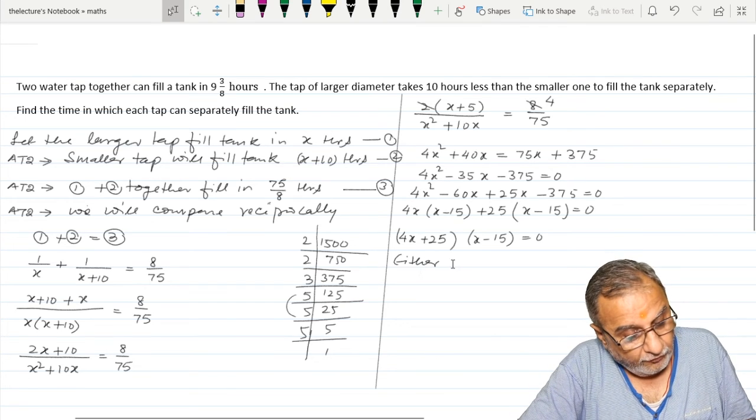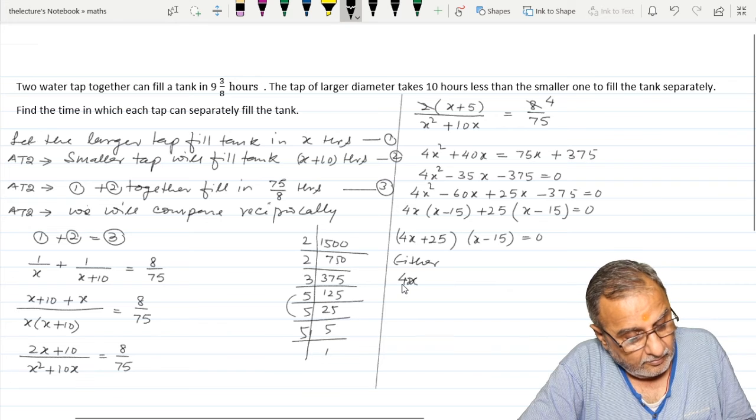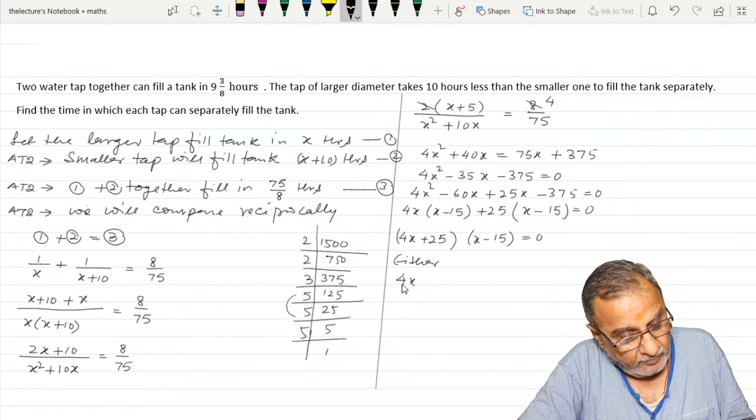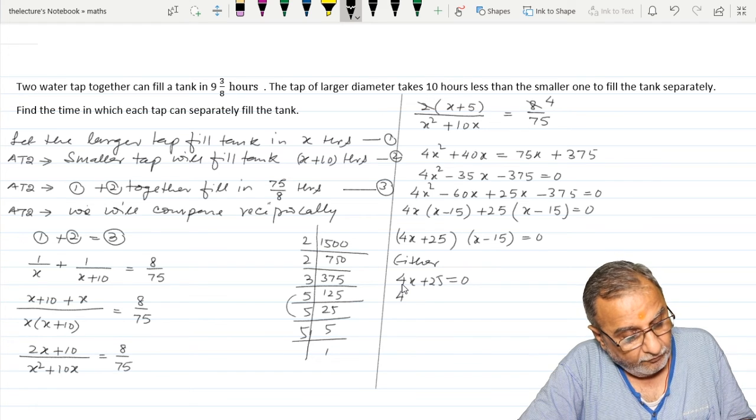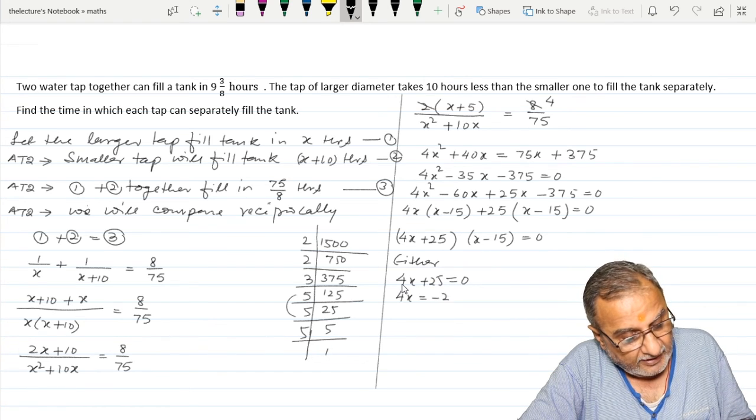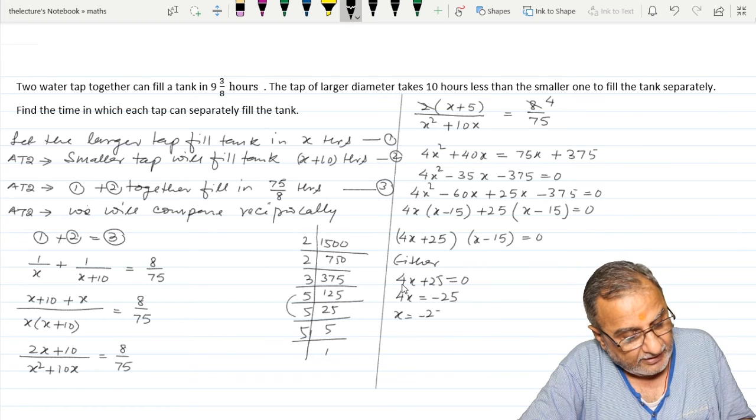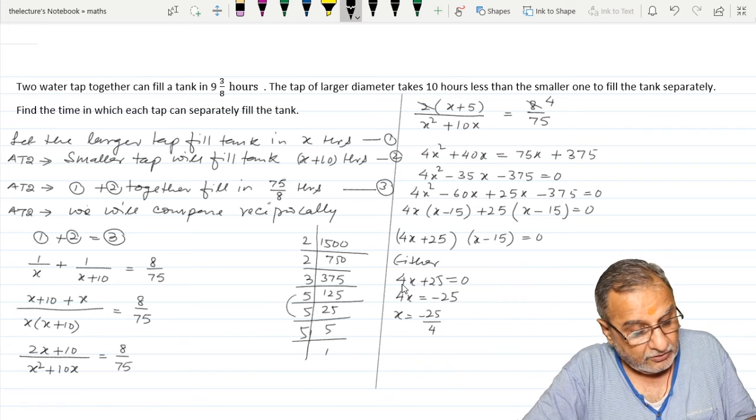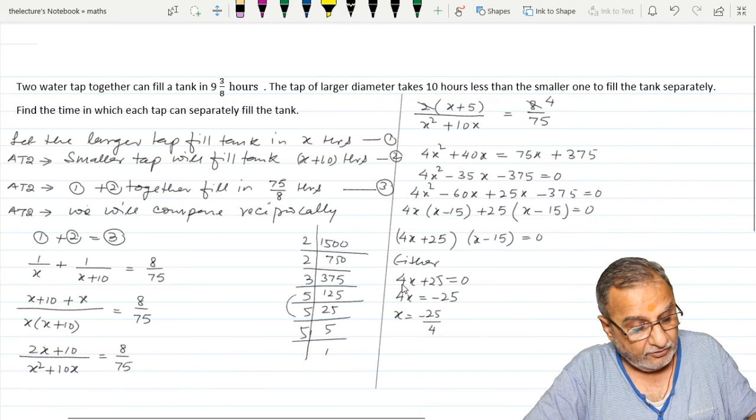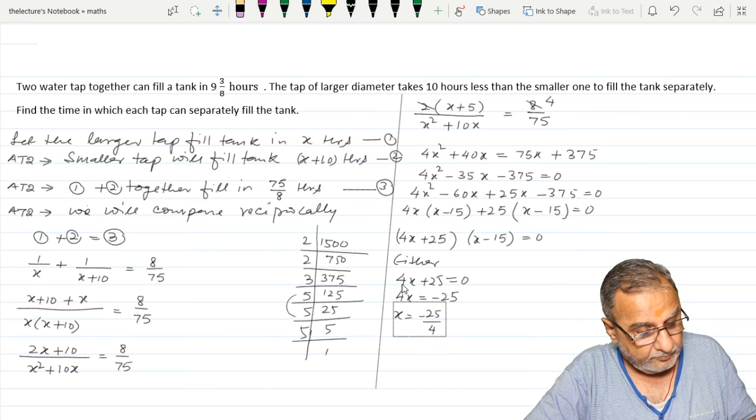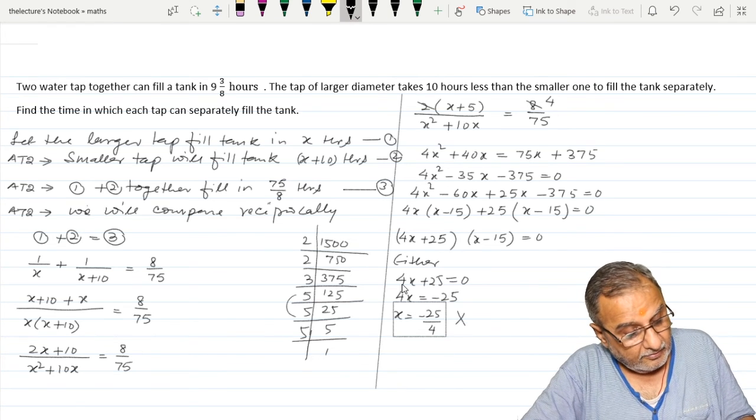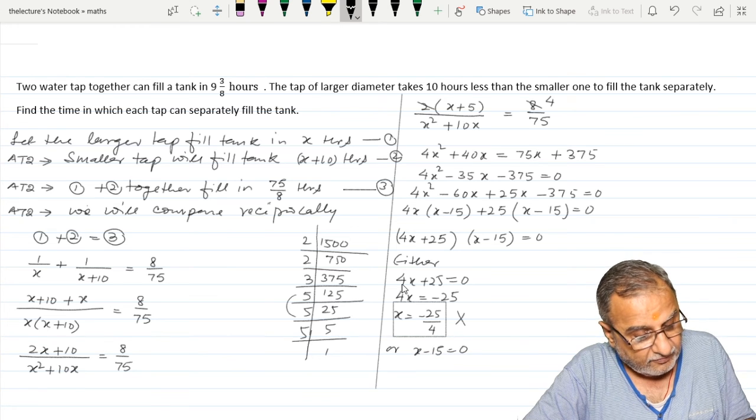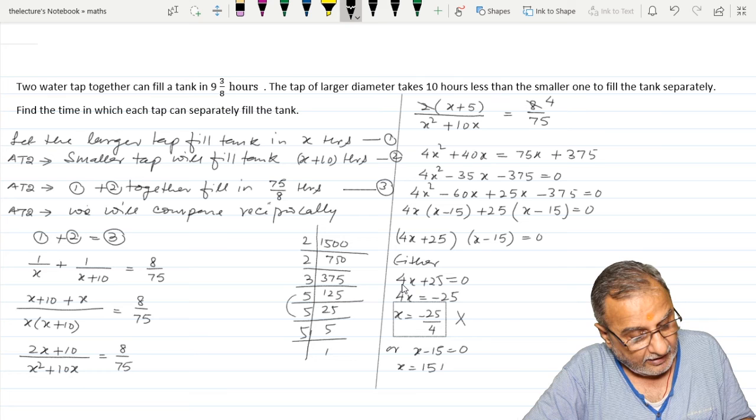Either 4X plus 25 equals 0, so 4X equals minus 25 and X equals minus 25 by 4. Time cannot be negative. So X will be 15 hours.